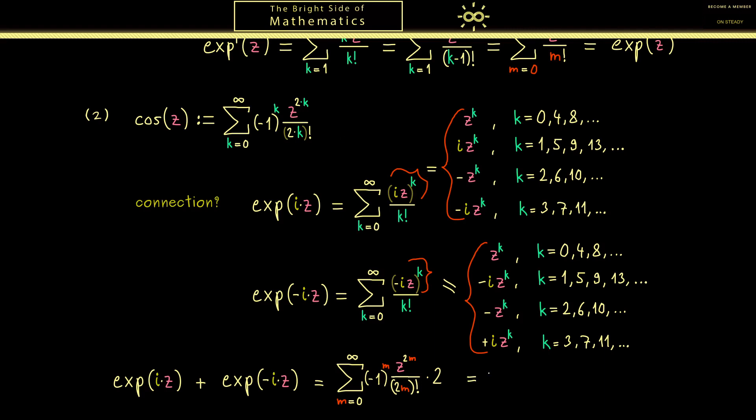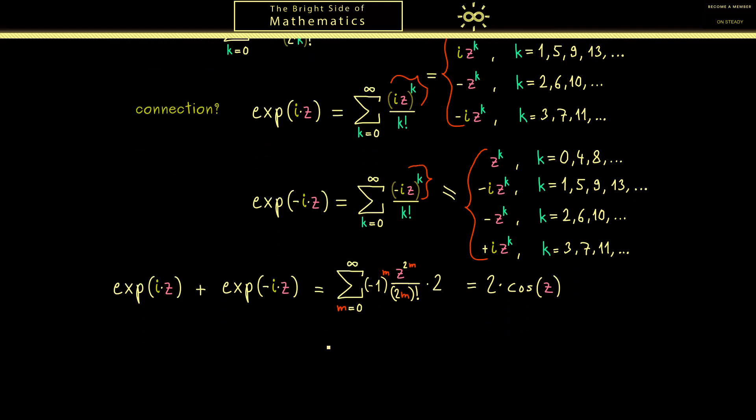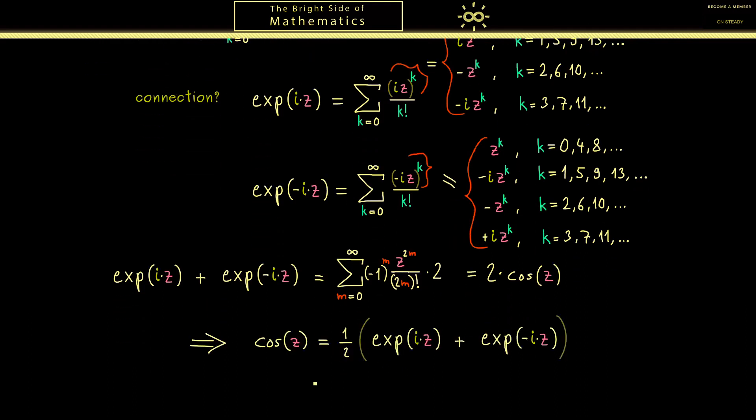This is very nice because we can also use this relation to calculate the derivative. So first let's state the formula again. Cosine can be written as 1 half times exponential i z plus exponential minus i z. Then of course we can simply use the chain rule to calculate the derivative of cosine of z. Now the inner derivative gives us the factor i in front. This happens for the first and the second exponential. But the second also gets a minus sign. And otherwise we can simply use the fact that the derivative of the exponential is the exponential again. There we have it. This is the derivative of the cosine. And you might already know this should be minus sine of z.